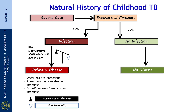Younger the child, higher is the risk of developing the disease. A child who is below 5 years would have a risk of about 25 percent, and a younger infant may have a higher risk of about 50 percent of developing the disease, while the lifetime risk is only about 5 to 10 percent.